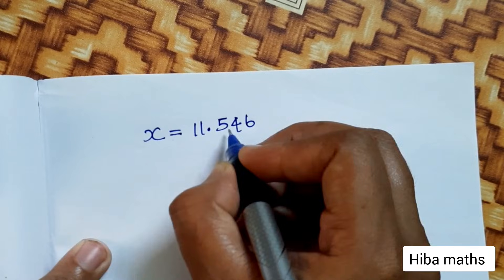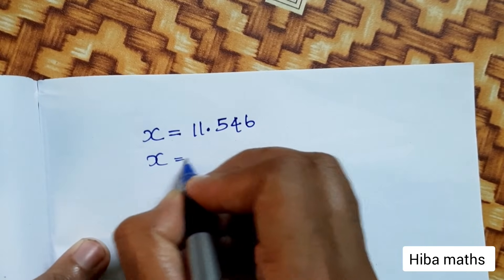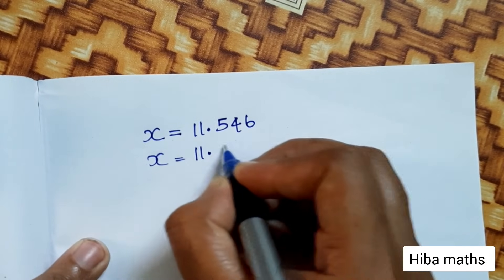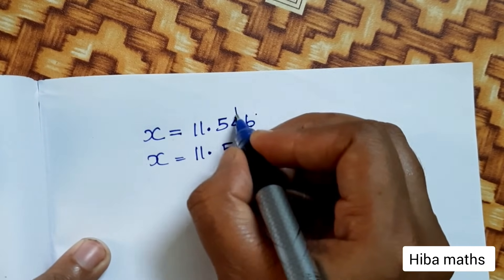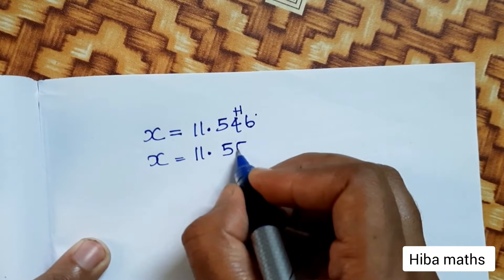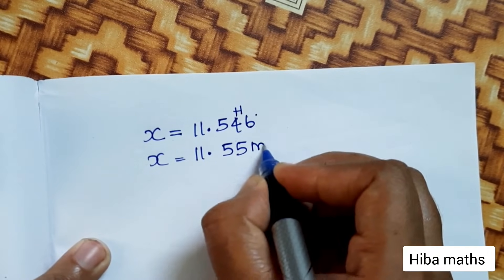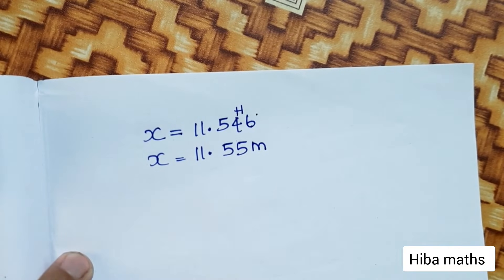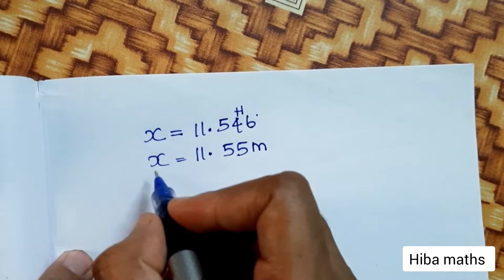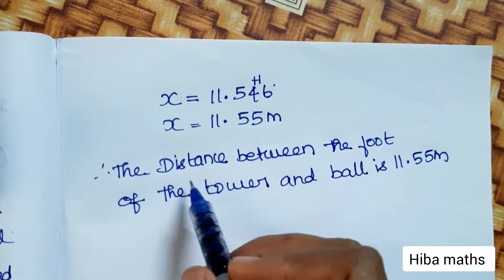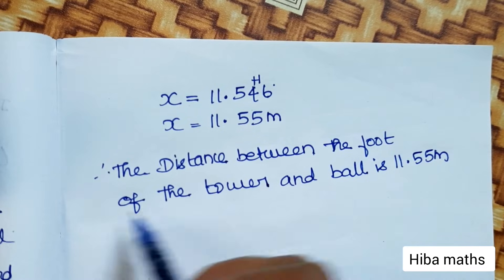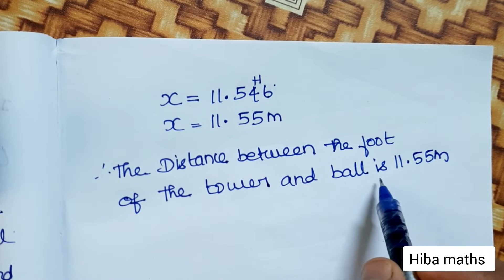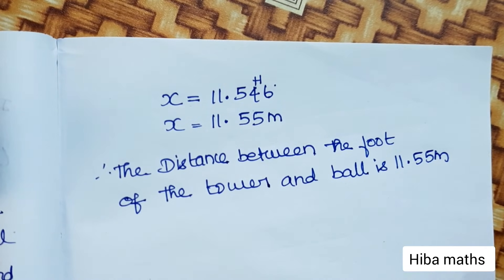Going to the decimal place, the x value is approximately 11.55 meters. The distance between the tower and the ball is 11.55 meters. The distance between the foot of the tower and the ball is 11.55 meters.